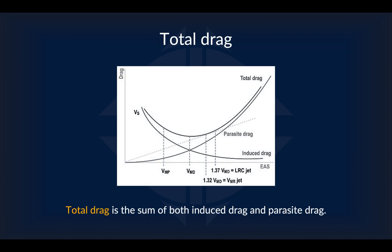Last but not least, here is total drag. It is simply the sum of both induced drag and parasite drag. Now, here's a fun question: at which speed should an aircraft fly? I'll give you a few seconds to figure this out.